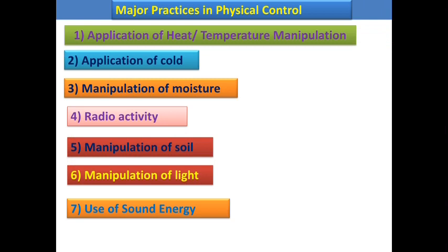There are seven major practices we can follow in physical control. The first is application of heat or temperature manipulation. Then application of cold, manipulation of moisture, radioactivity, manipulation of soil, manipulation of light, and use of sound energy. These seven practices will help to reduce the pest population in our field.